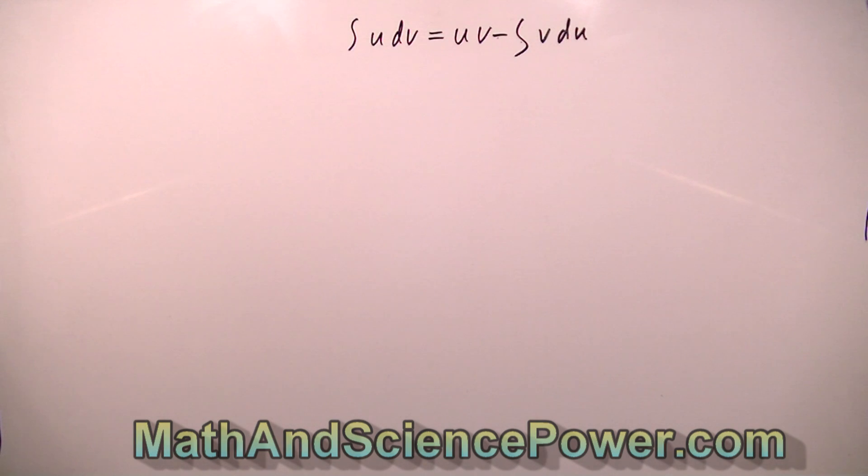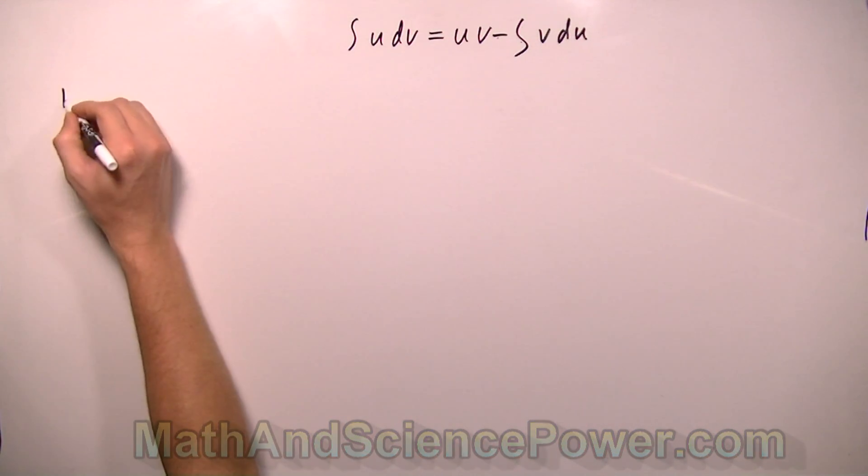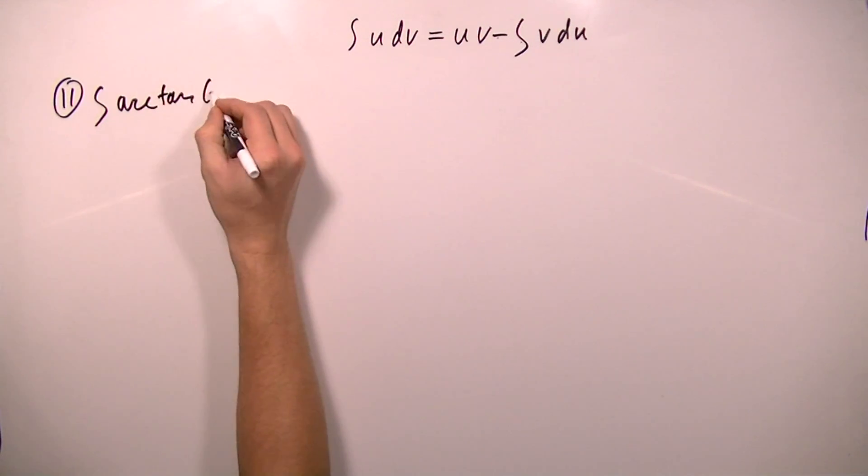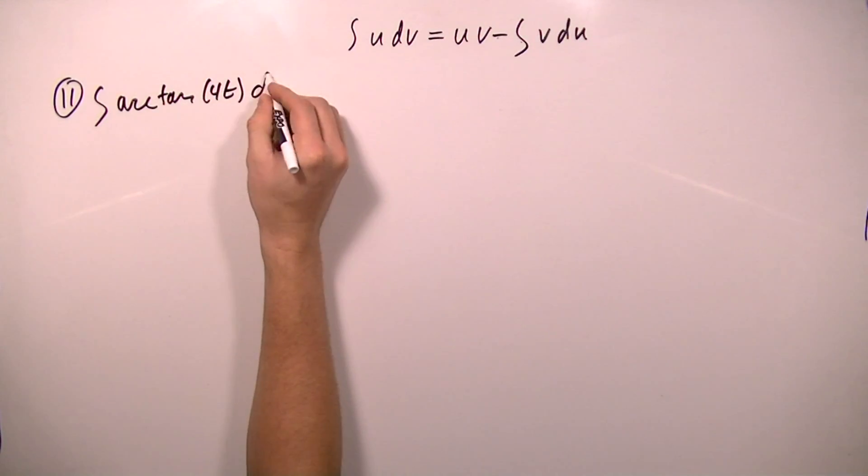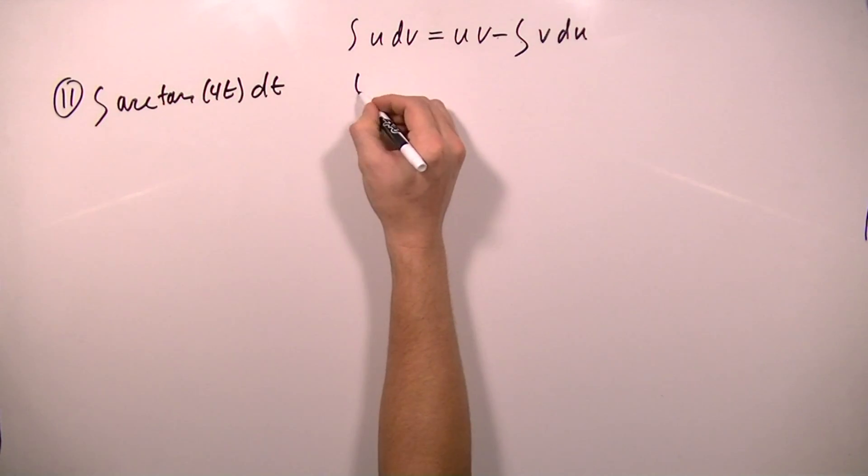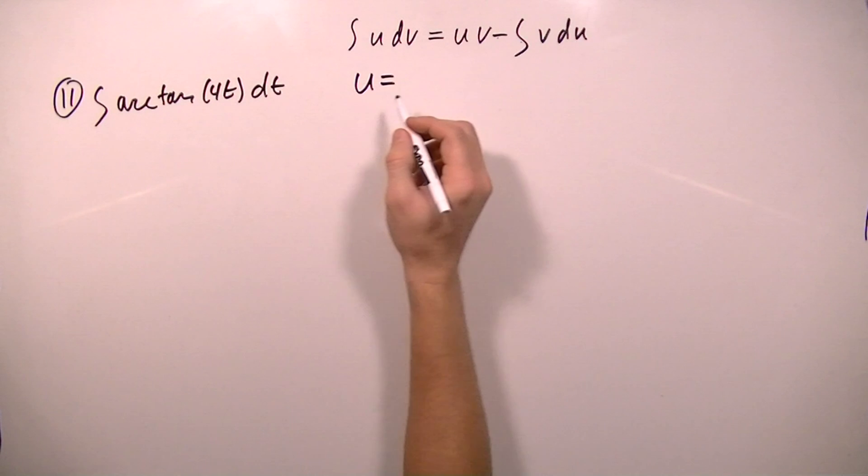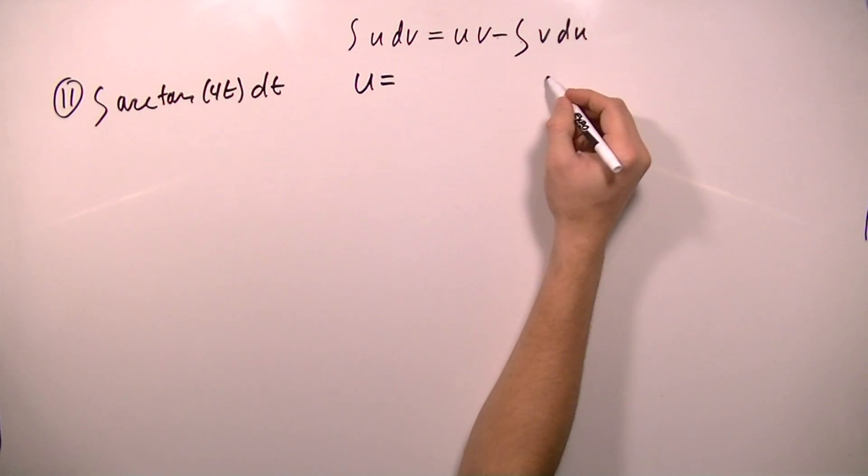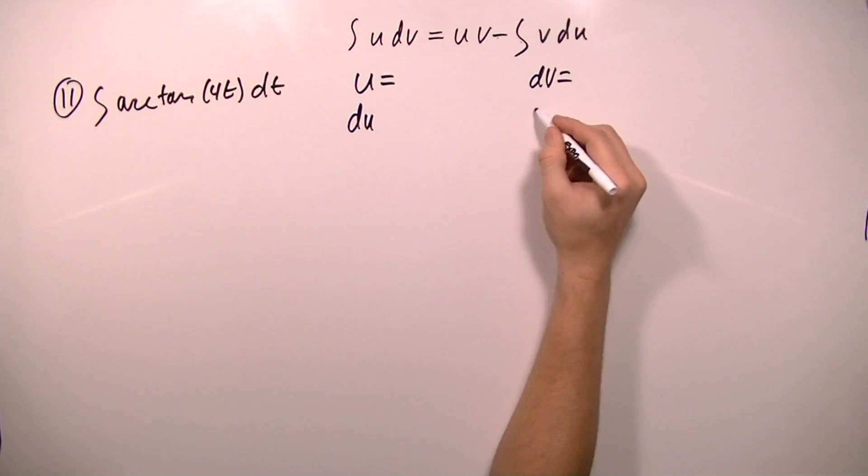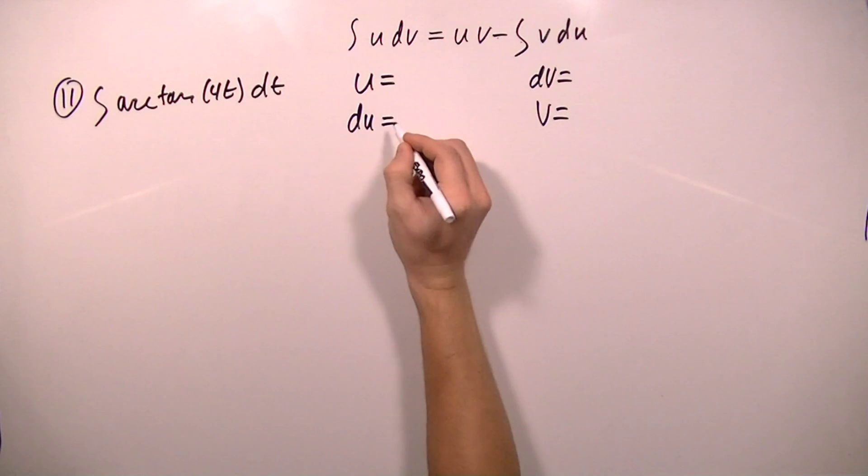Okay, we're doing integration by parts, and number 11 asks us to find the integral of arctan 4t dt. Since this is integration by parts, we need to pick which factor we want to be u and which factor we want to be dv. And then we will find the derivative of u and we will find the integral of dv.